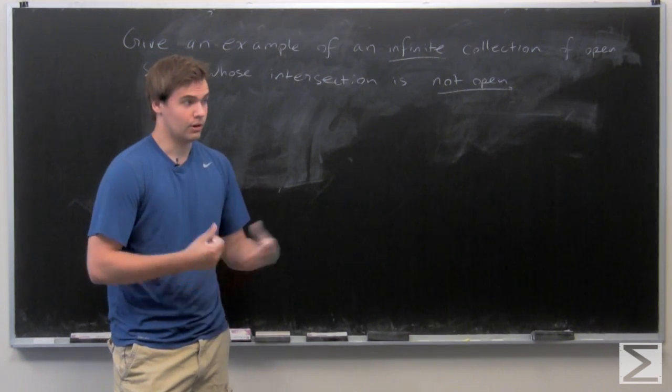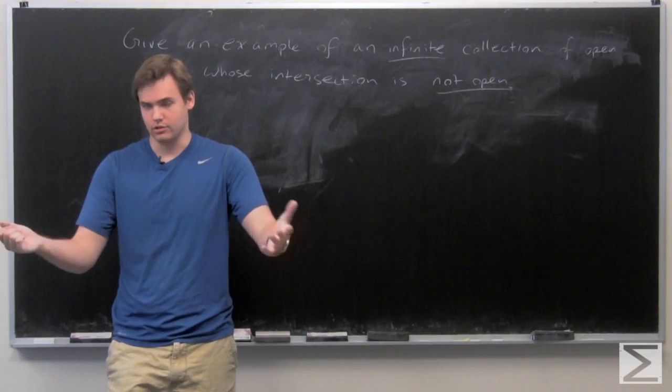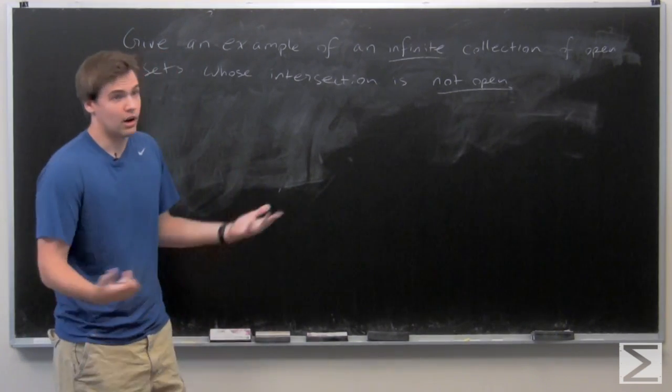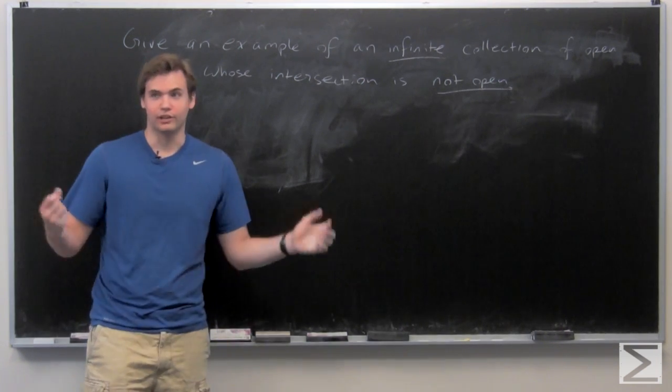So we want to see what happens when, or what goes wrong, when that intersection is over an infinite collection of open sets and how it's not always open. So the problem is we want to give an example of a weird collection.